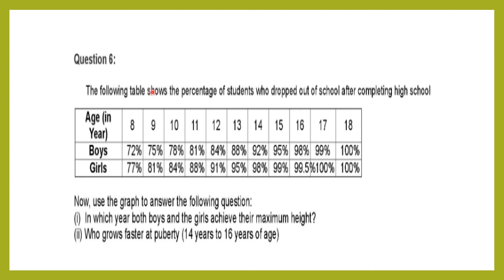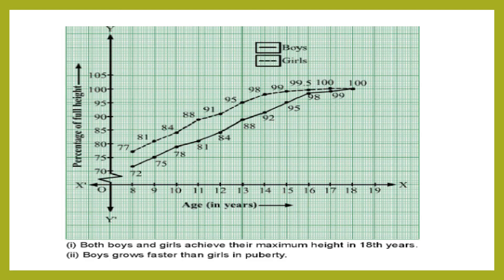The following table shows the percentage of students who dropped out of school after completing high school. We are going to use the graph to answer: In which year did both boys and girls achieve their maximum height? Who grows faster at puberty between 14 to 16 years of age? Age in years is taken along the x-axis and percentage of full height along the y-axis. One division along the x-axis is 1 unit and along the y-axis is 5 units.